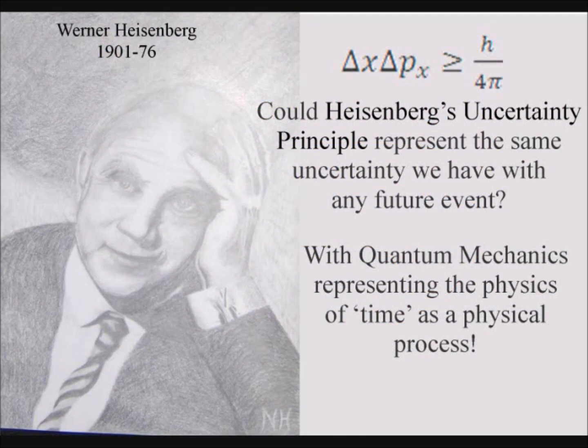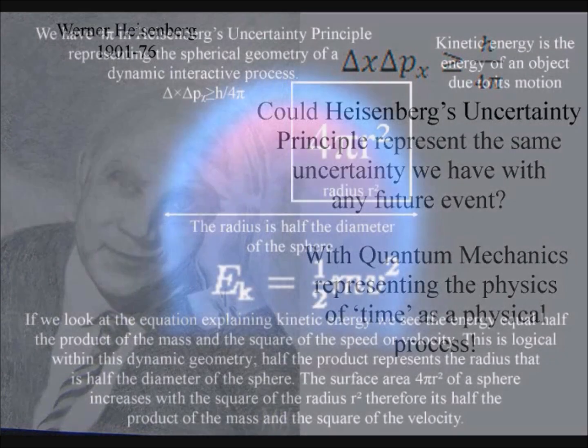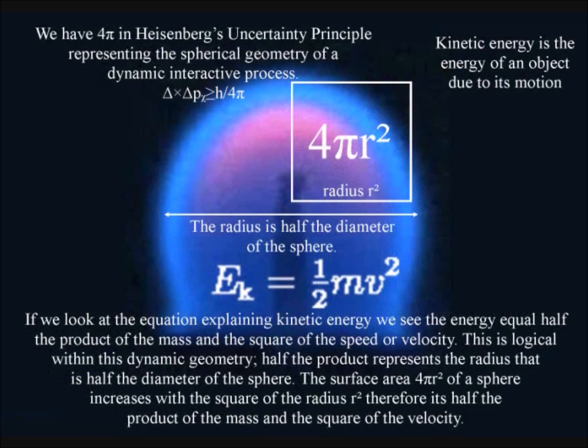If we look at the equation explaining kinetic energy, we see the energy equals half the product of the mass and the square of the speed or velocity. This is logical within this dynamic geometry. Half the product represents the radius, that is half the diameter of the sphere. The surface area of a sphere increases with the square of the radius, therefore it's half the product of the mass and the square of the velocity.